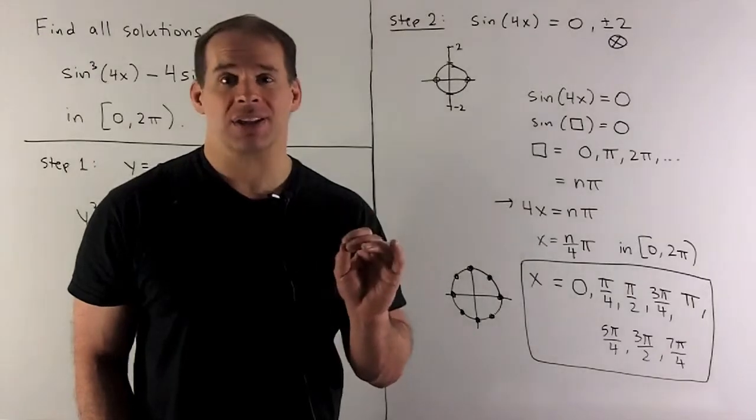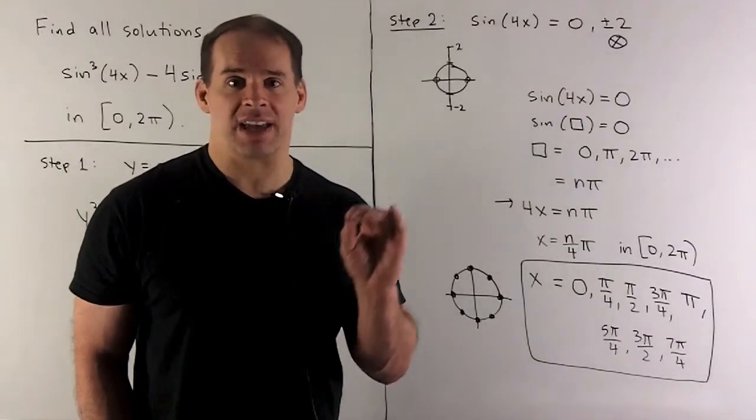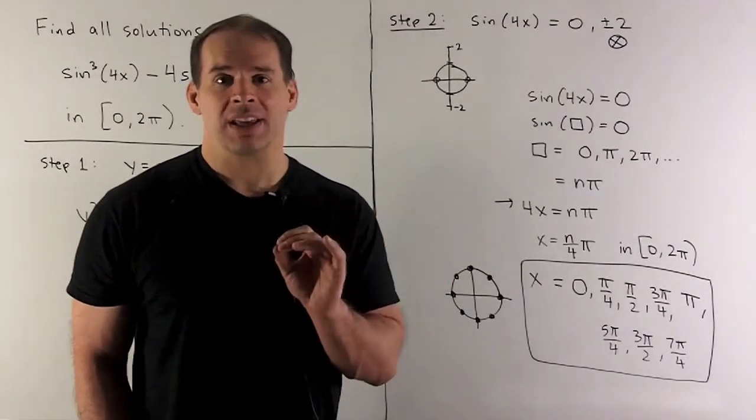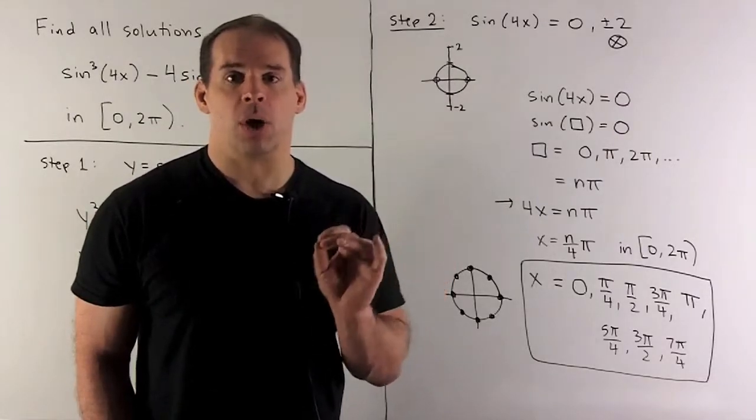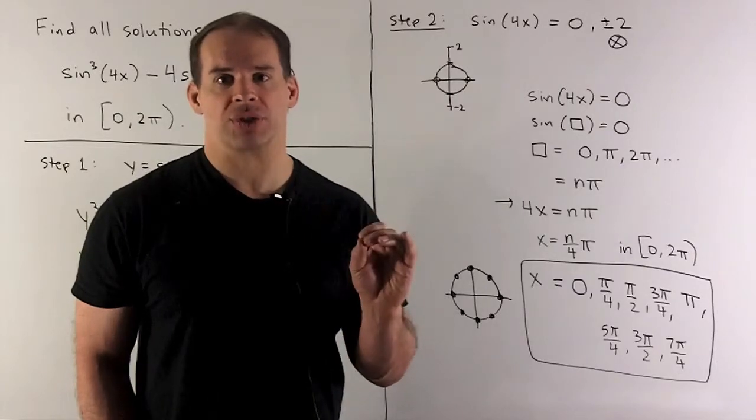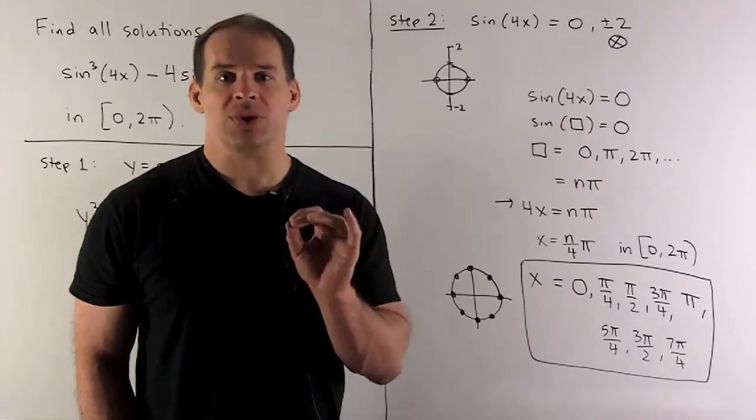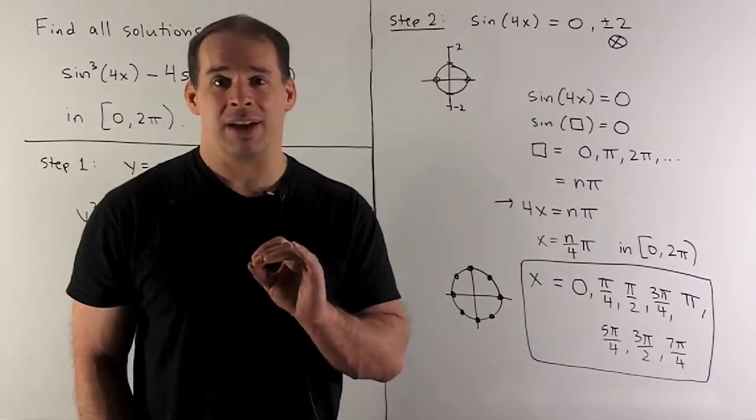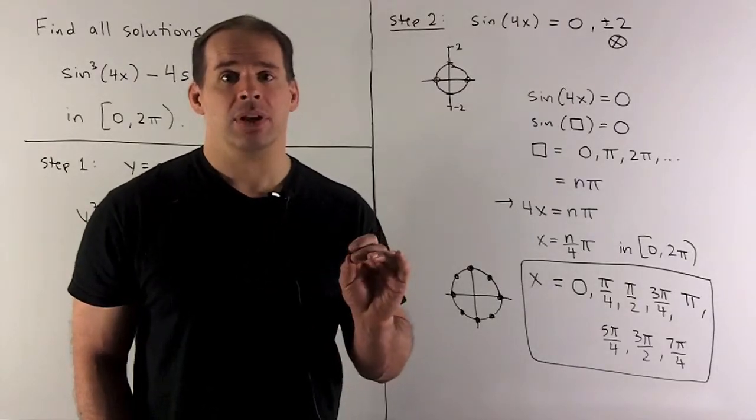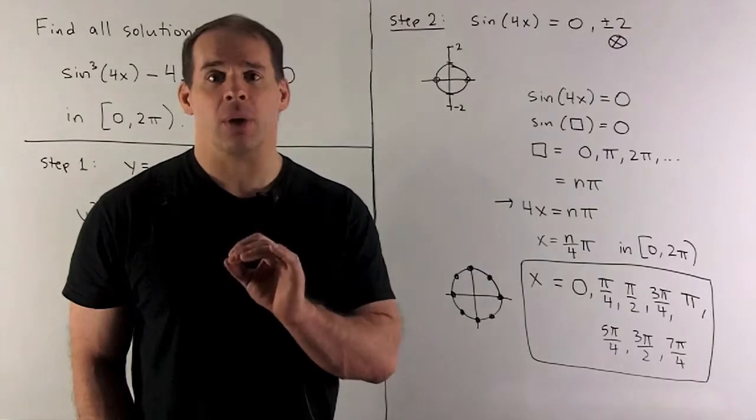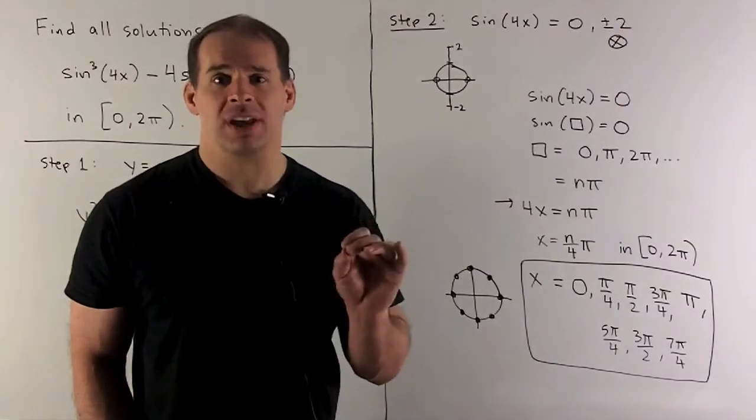We put back in 4x. So that gives 4x = nπ, or x = nπ/4. So our solutions are going to be multiples of π/4. If I use negative multiples, we get negative numbers out, we're not going to be in [0, 2π). So I'm going to start at 0 and just keep adding π/4 until we hit 2π.